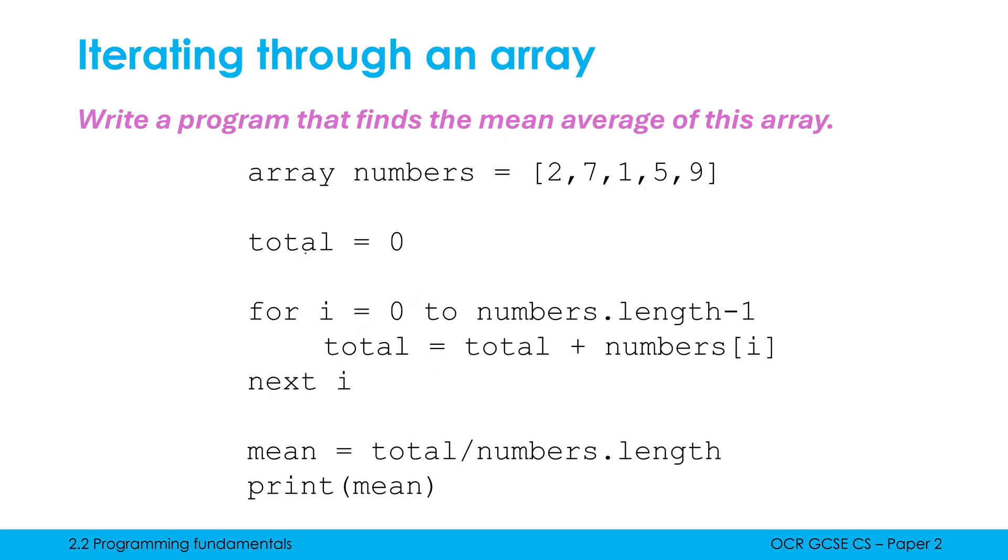So first time this code runs, total is set to be zero. Total is zero and we're adding numbers index i. Well, i initially is zero. What is numbers index zero? It's two. So adding zero and two gives the new value of total being two. For the next time it loops, we've got total being two, then we're using i as one. So numbers index one is going to be seven. So we're doing two plus seven is nine. Then next time around, we're doing nine plus numbers index two. Numbers index two is one, so nine plus one is 10. And so on. We're going to add five to this to make it 15, and then 15 plus nine is 24. So eventually total is going to equal 24.